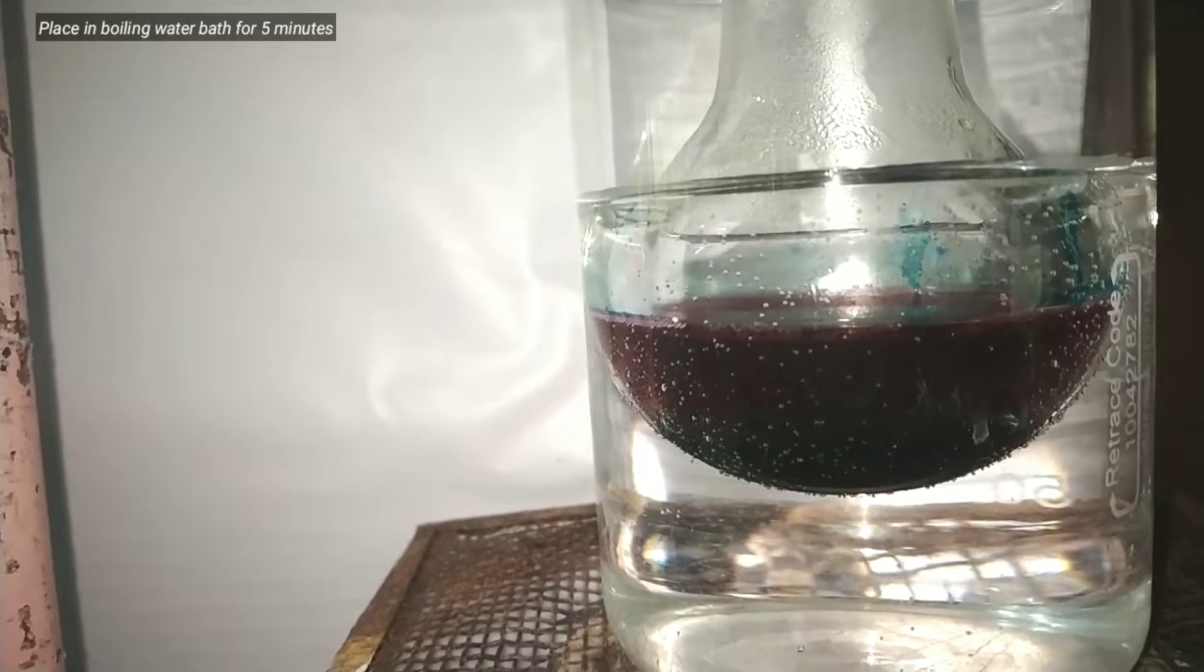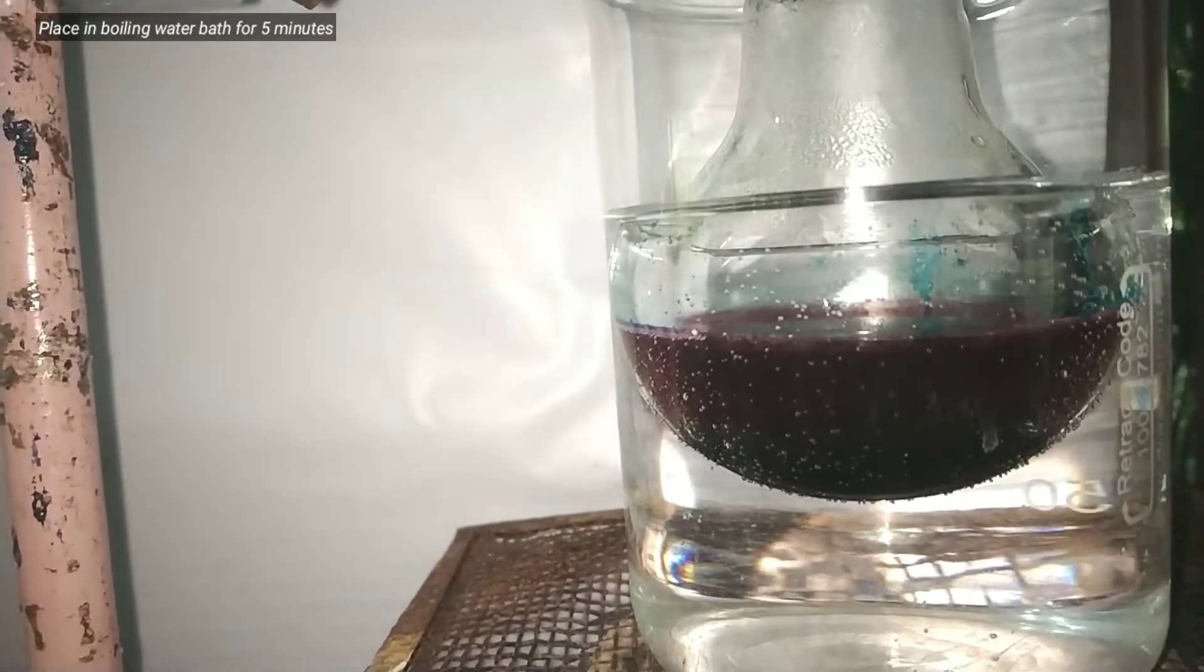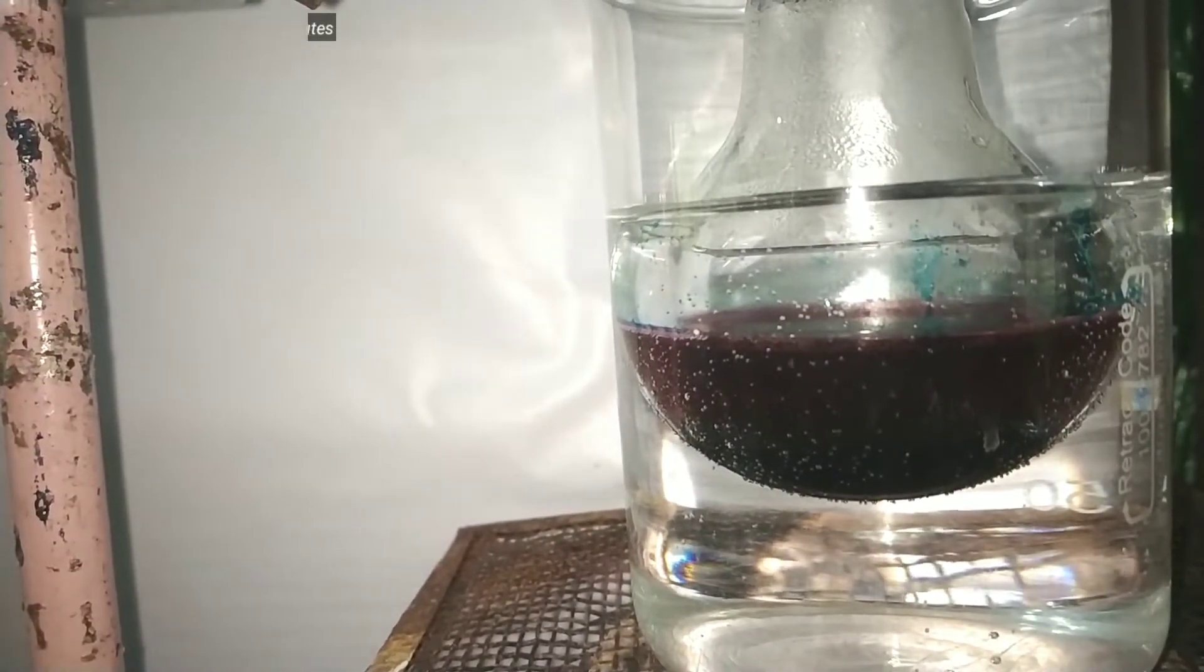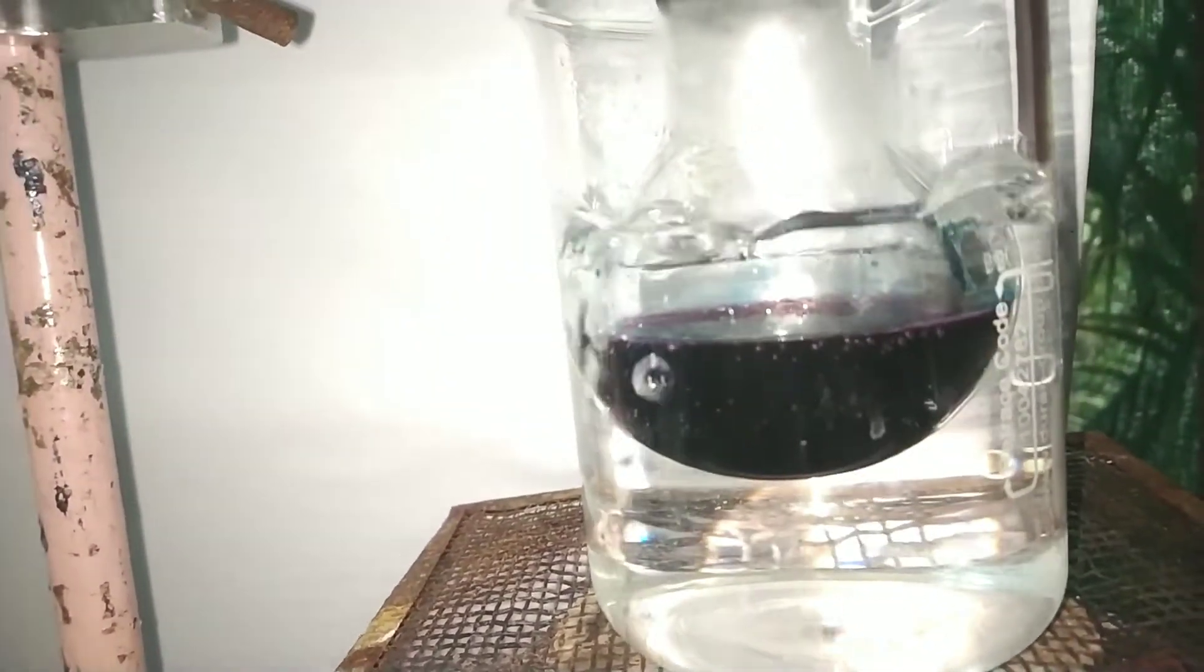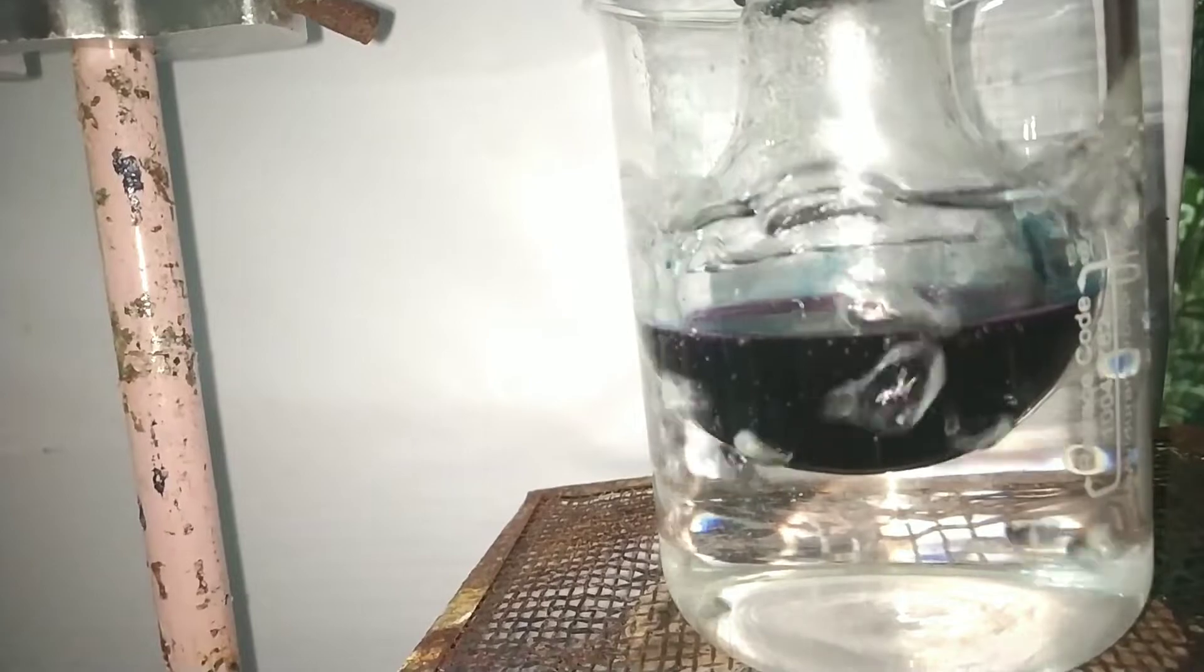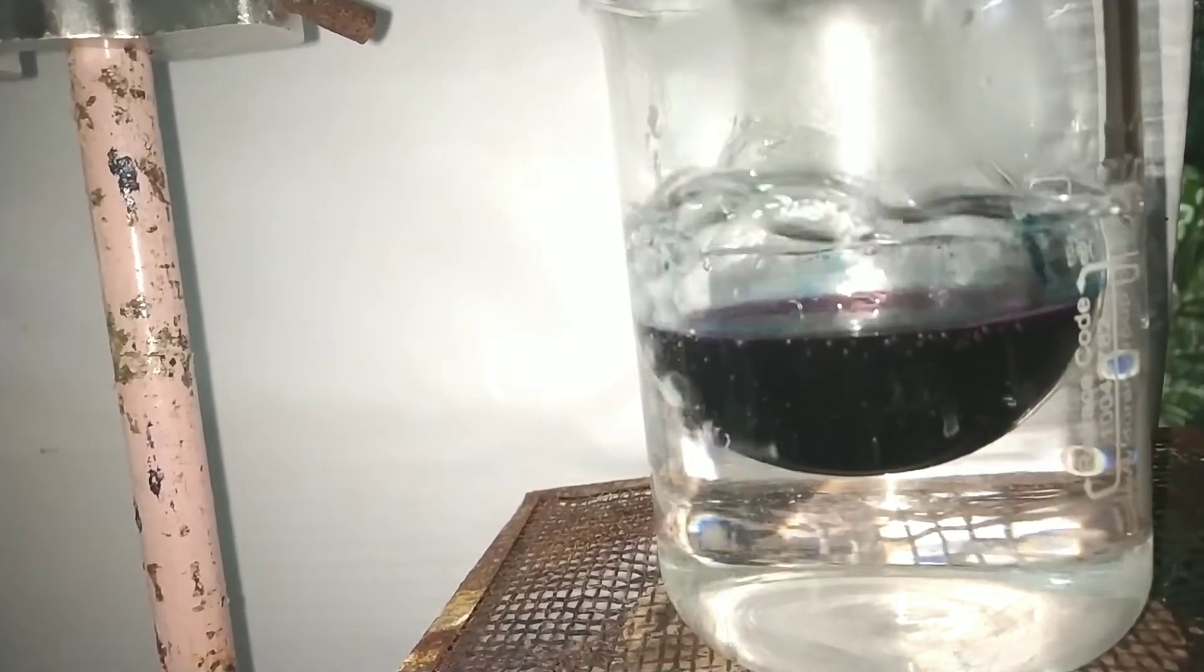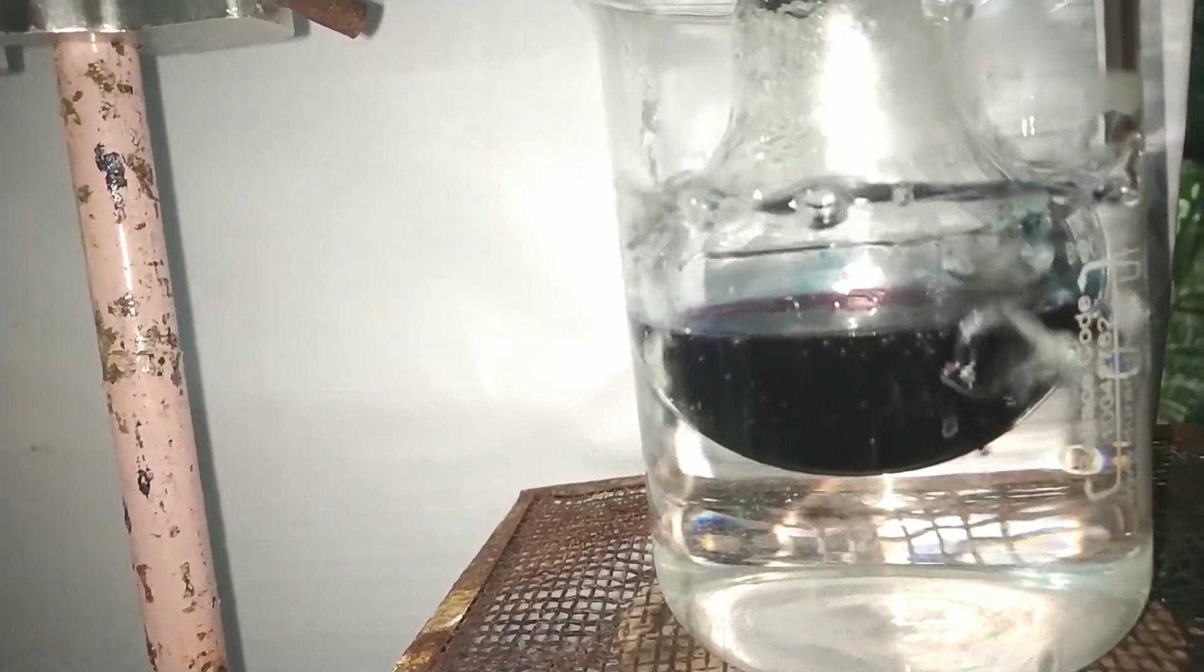Now the flask is placed in a boiling water bath for 5 minutes. You can see that the blue color is intensified as the cobalt(II) chloride salt on increasing temperature gets a blue color. This along with the tetrathiocyanate of cobalt complex gives the blue color.